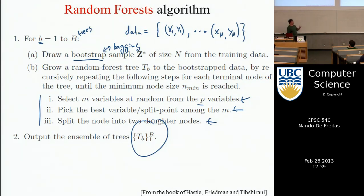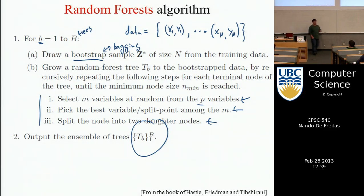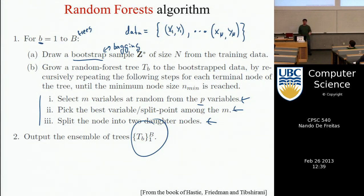This won't necessarily be the globally best information gain if you looked at all variables, but choosing different variables in each node is one of the things that decorrelates the trees. At the end of the fitting procedure, you output this ensemble of B trees, each making a prediction. When you want to predict the value for a new data point, you pass it down each tree, each tree makes a prediction, and then you take a majority vote or average over the trees.